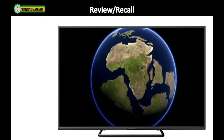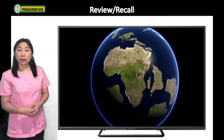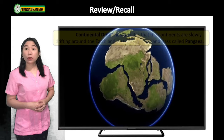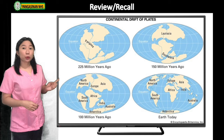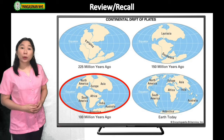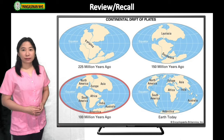In our previous lesson, you learned about Continental Drift Theory. According to this theory, continents are slowly drifting around the Earth and were once a large landmass called Pangea. This supercontinent Pangea was divided into two supercontinents named Laurasia and Gondwanaland. Pieces of Laurasia drifted to the north while pieces of Gondwanaland drifted to the south, and eventually drifted into today's seven continents.